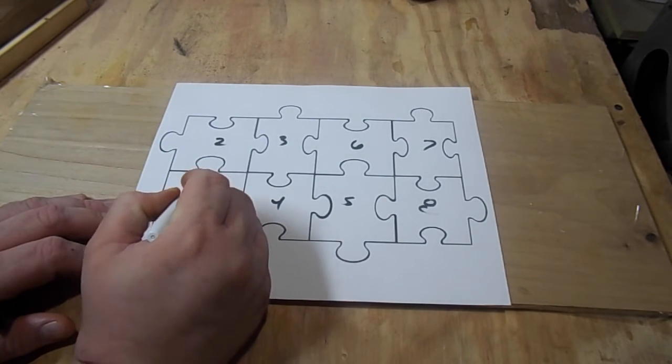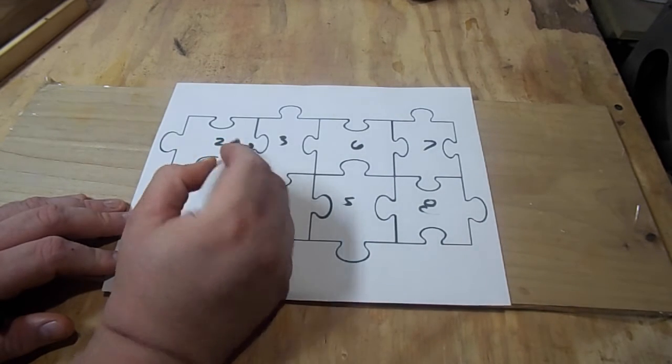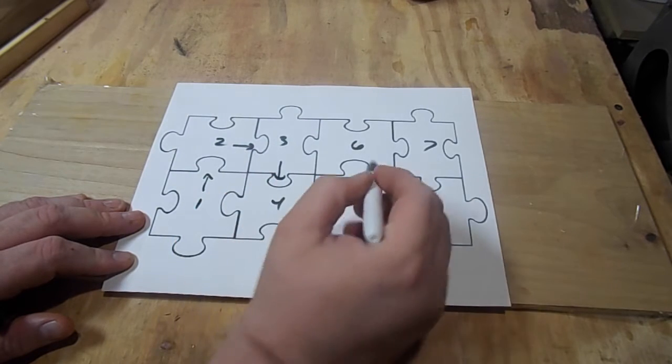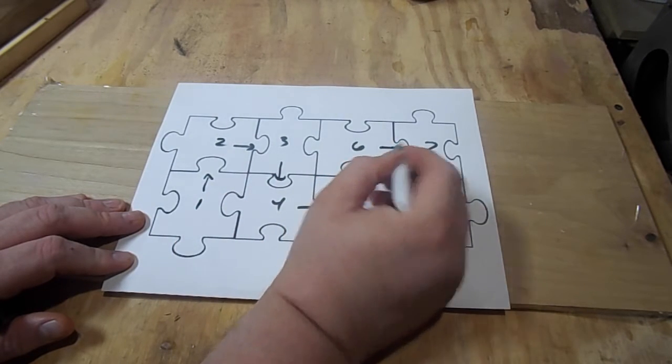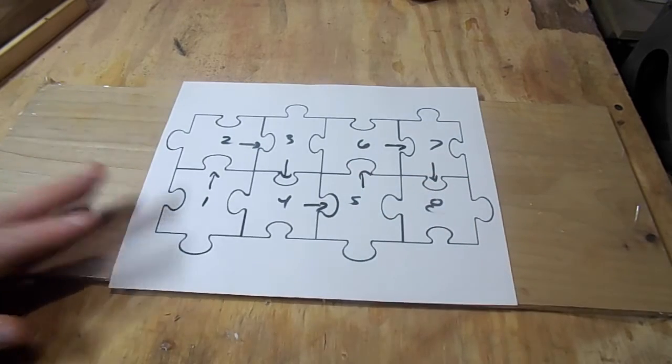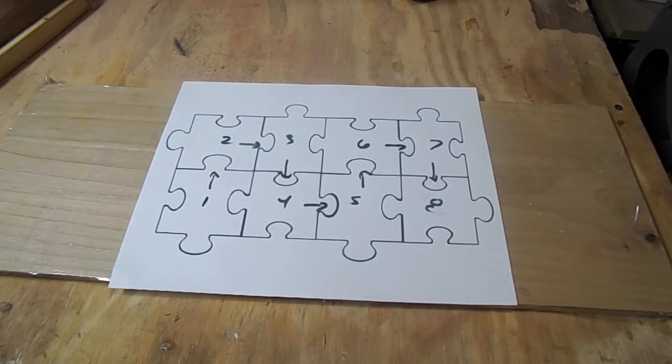What I did was then drew a series of arrows with the way the pieces fit. It worked fairly well for me because it gave me an idea of kind of the way I needed to cut.